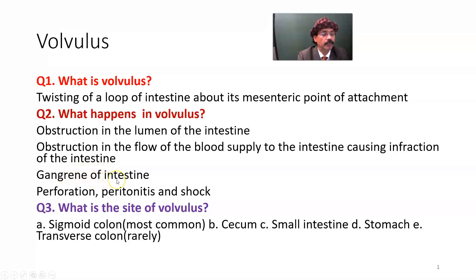Gangrene formation may occur. There will be degeneration and necrosis of the cells, then gangrene formation. Possible perforation, peritonitis, and shock are also possible in volvulus in the late stages if it is untreated.